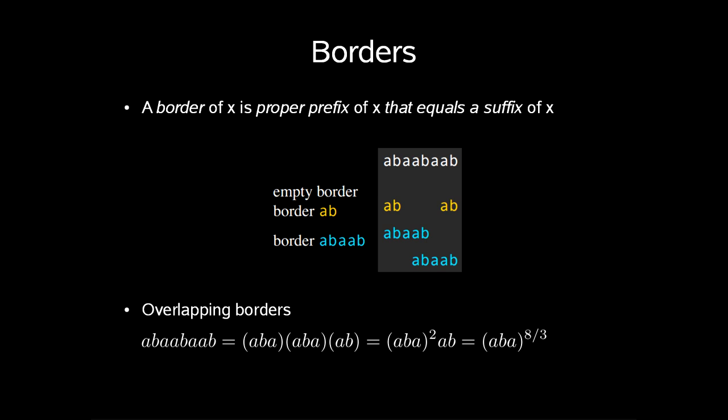So a border of x is any proper prefix of x that equals a suffix of x. An example of the string a b a a a b: we have the border a b given that it is both a prefix and a suffix. The same is true for a b a a b.